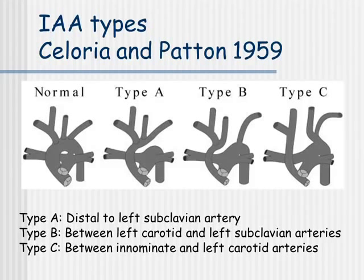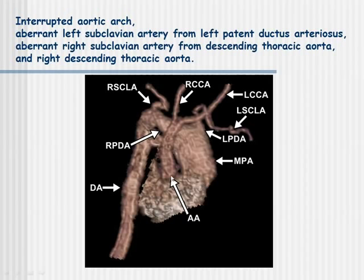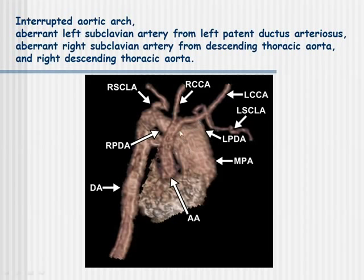Here's an example of a CT angio of a patient with IAA, with a narrow ascending aorta giving rise to the right carotid artery and left carotid artery. The pulmonary artery is very wide, and the left subclavian artery arises from the left patent ductus arteriosus. There's also an aberrant right subclavian artery from the descending thoracic aorta and right aortic arch, which is common in these patients.